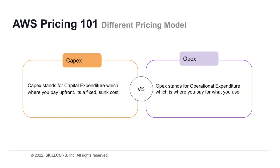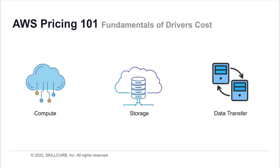That's why, prior to public cloud, people would have to go out and raise capital and get investors on board to even get the ball rolling. OpEx stands for operational expenditure, which is where you pay for what you use — paying for things as you use them. This is what startups usually use because it's cheaper for them.